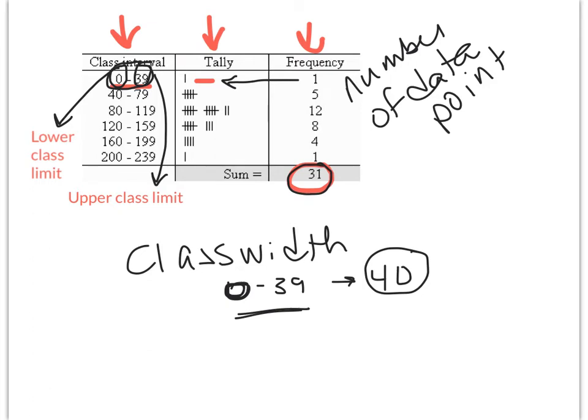You have 6 classes. And I know that because I have 1, 2, 3, 4, 5, 6 different buckets per se that you could put your data into. And I have 31 data entries. And I know that because I have 31 pieces of data. So look at all the information we're able to gather from just this simple table.